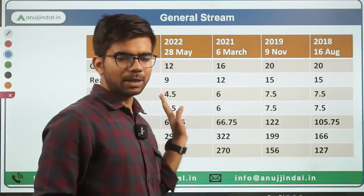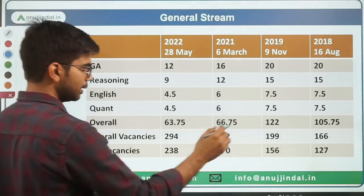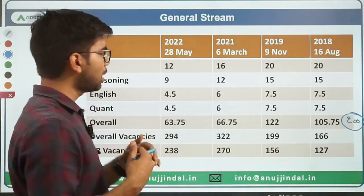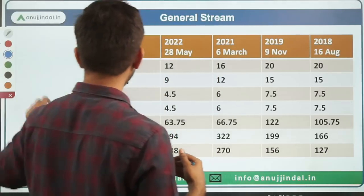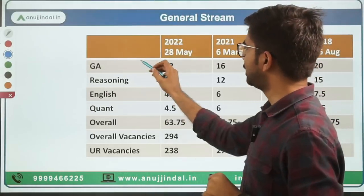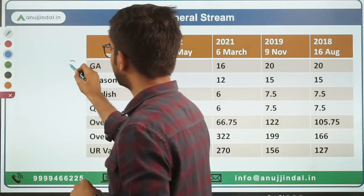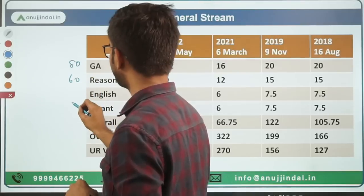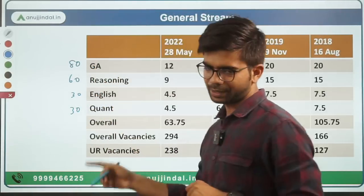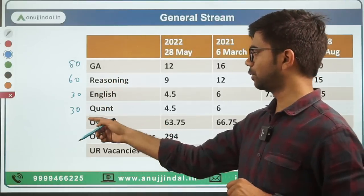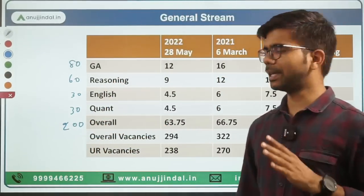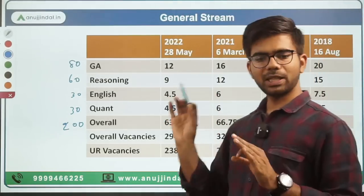These marks are out of 200. The breakdown is: GA — 80 marks, 80 questions; Reasoning — 60 marks, 60 questions; English — 30 marks, 30 questions; Quant — 30 marks, 30 questions. Total: 200 questions of 200 marks. It is a general aptitude paper but the difficulty level is quite substantial.